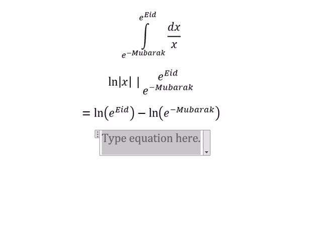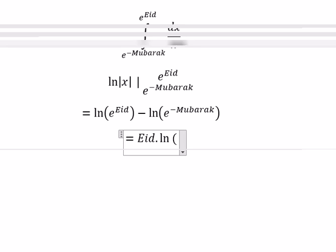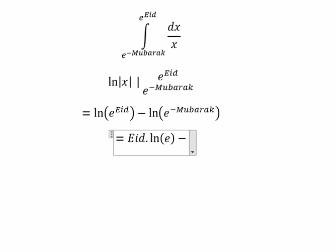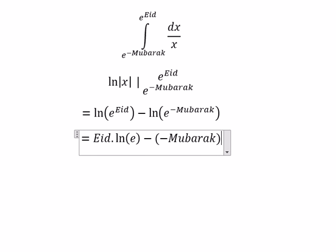Next, we get Eid multiply ln of e minus negative Mubarak multiply ln of e.